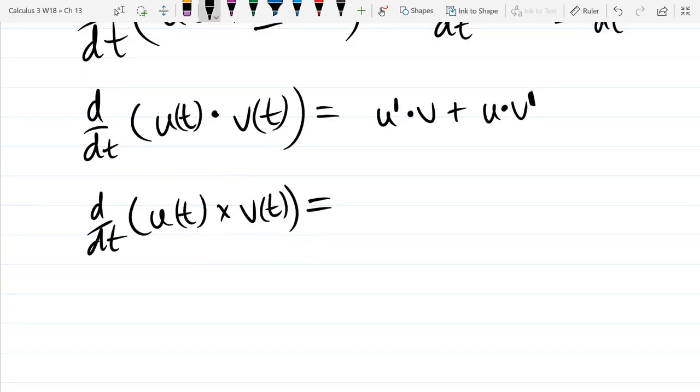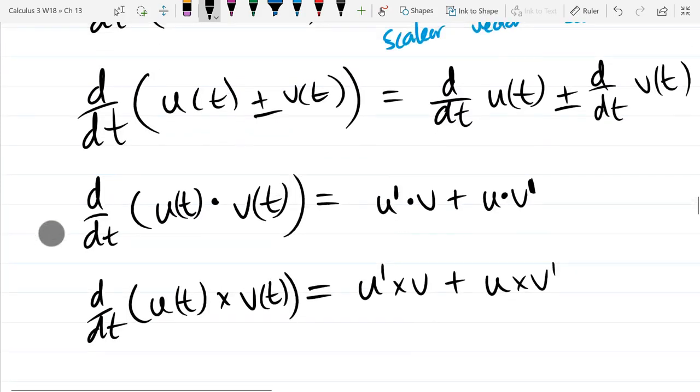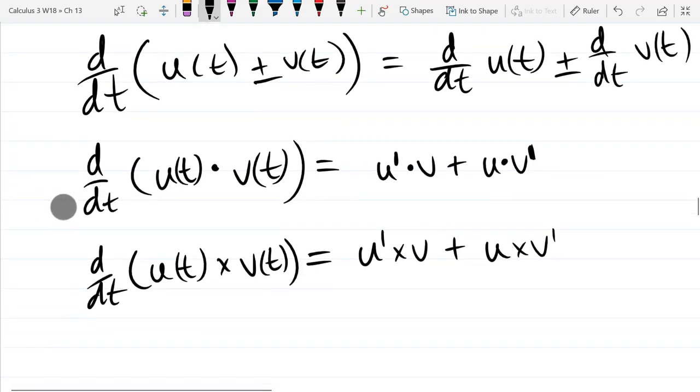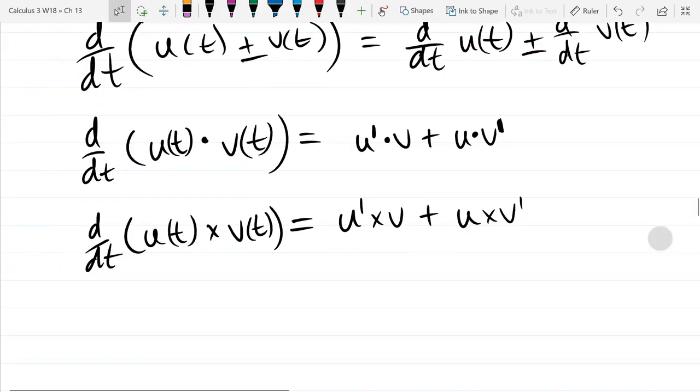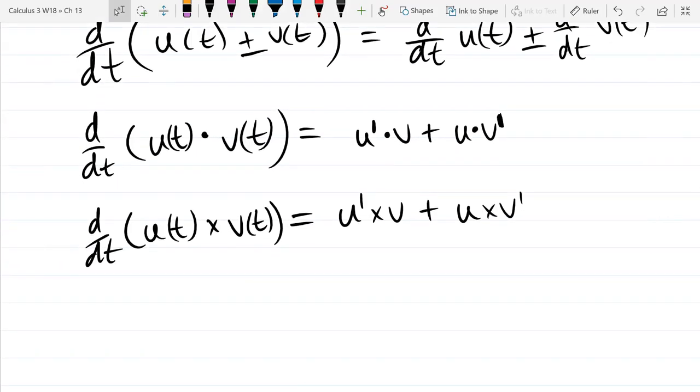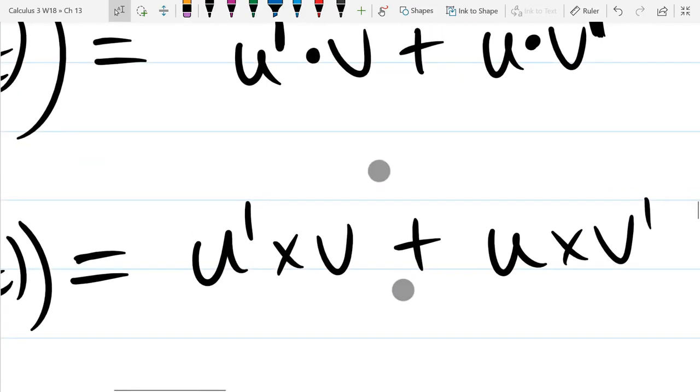All right. So this one is going to be u prime cross v plus u cross v prime. If you want my opinion on the educational system, I will tell you after I'm done recording. So those product rules should be no surprise. There's the dot product rule and the cross product rule. You have to be super careful with the cross product. The order is super important. So you can't just turn them around. What happens if you turn one of these around?